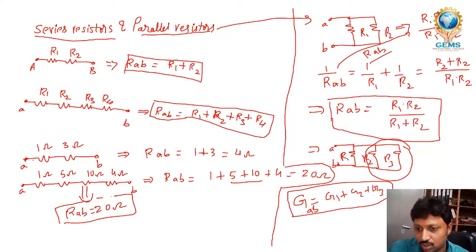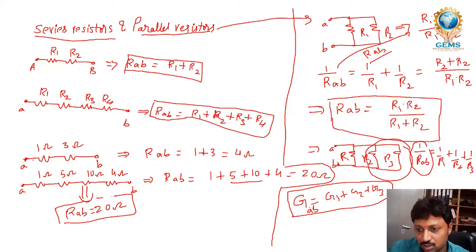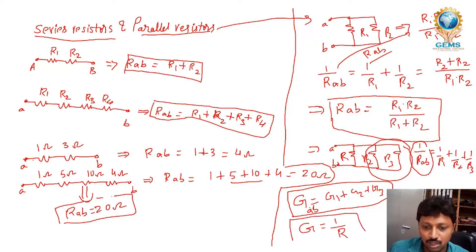Alternatively, you can use the conductance method: total GAB is equal to G1 plus G2 plus G3. That is, 1 by RAB equals 1 by R1 plus 1 by R2 plus 1 by R3. Since conductance is the reciprocal of resistance — GAB is 1/RAB, G1 is 1/R1, G2 is 1/R2, G3 is 1/R3.